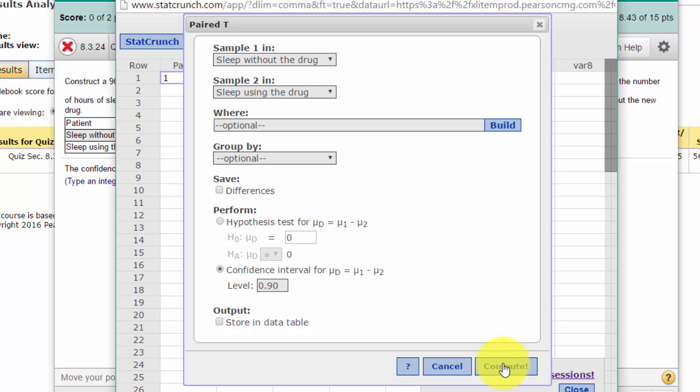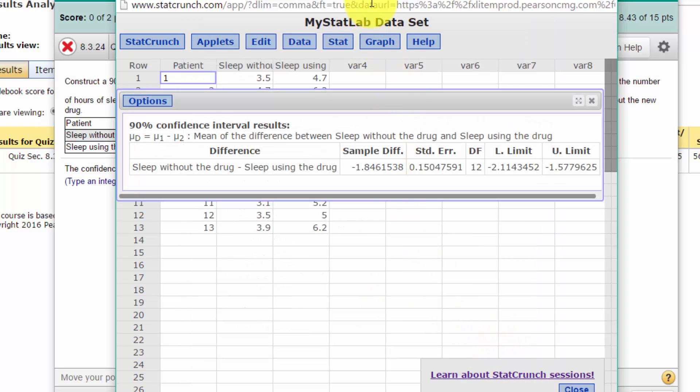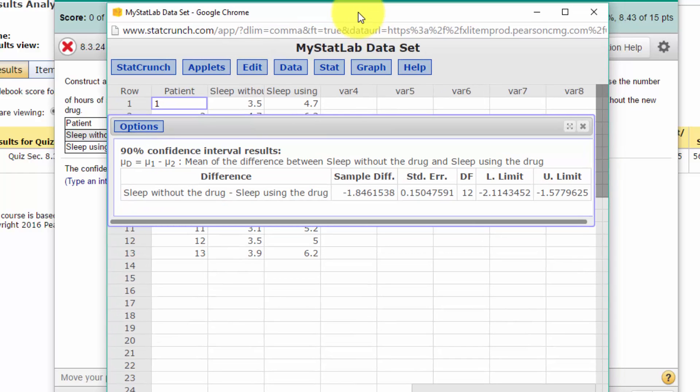All we do is click Compute, and we get the confidence interval. There's the lower limit and the upper limit. The sample difference is 1.846, so it goes from -2.114 on the lower side up to the upper limit of 1.577.